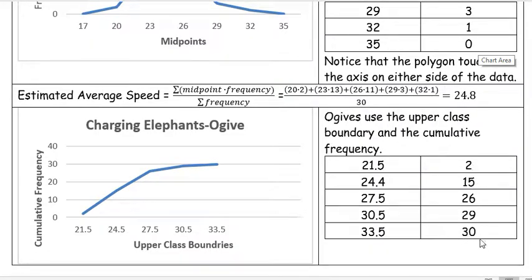The last number should be the total number of our data set, which we had 30 elephants, so it makes sense that we had 30. Then we say at 21.5 we had 2, and by 24.5 we had 15, and by 27.5 we were up to 26, and then 29, and the very last thing we did was we finally hit 30.